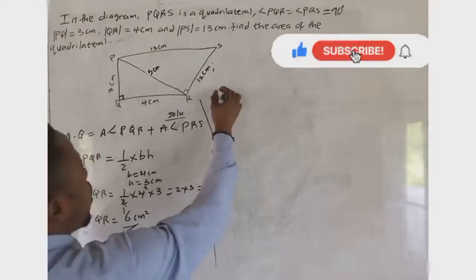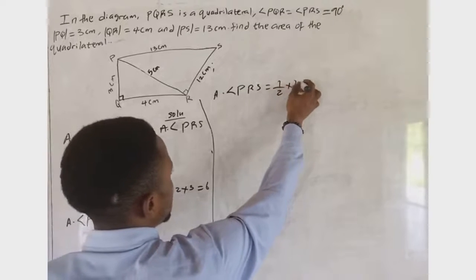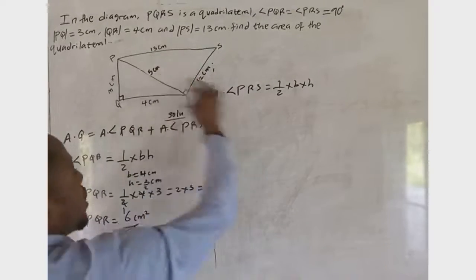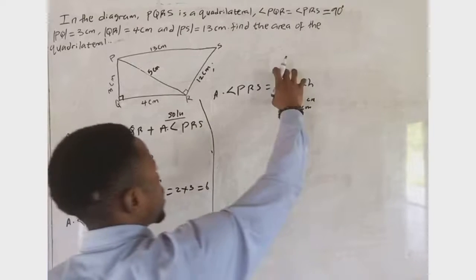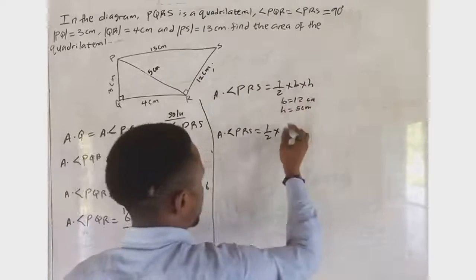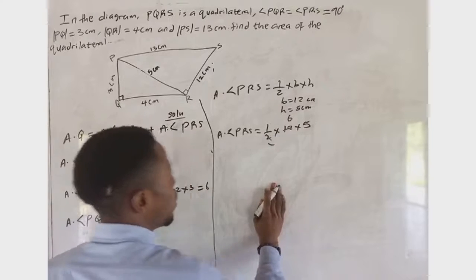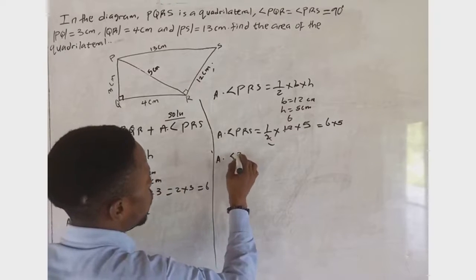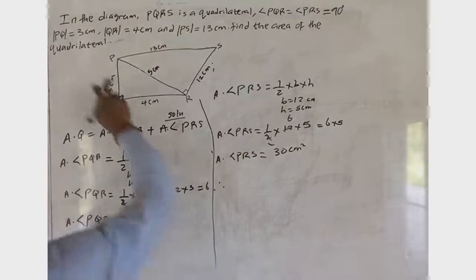For the second triangle, area of triangle PRS = ½ × base × height. Our base is 12 cm and our height is 5 cm. So area of PRS = ½ × 12 × 5. That gives us 6 × 5 = 30. Therefore the area of triangle PRS is 30 cm².